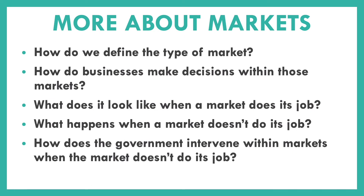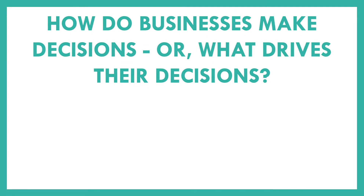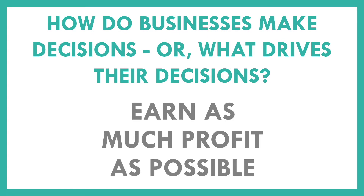Back in 3.1, we had taken a look at some of the questions we were asking about markets throughout the unit — like how do we define the type of market? We discussed that we do that by talking about the number of suppliers within that market. But today we want to look a little bit closer at a second question: how do businesses make decisions within those markets? When we think about what drives their decisions, it's that businesses want to earn as much profit as possible.